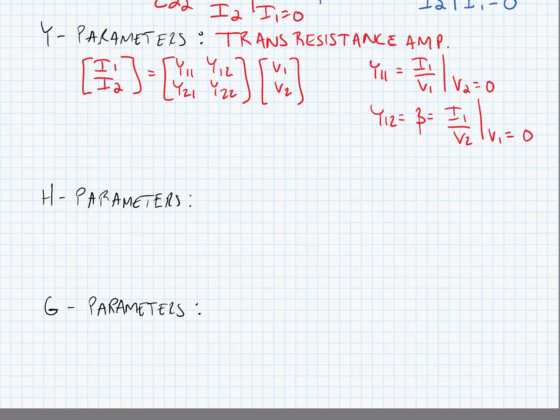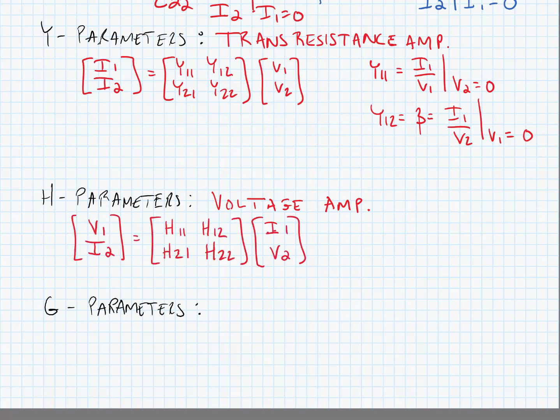The next two parameter sets are called hybrid parameters because each of the parameters is different — they aren't all the same in terms of their parameter values. Let's look at H-parameters, which are used for voltage amplifiers. Our H-parameter matrix equation is given by the following. We can see that we have a blend of voltages and currents at the input and output. H11 is equal to V1 over I1 when V2 is equal to 0 — in other words, we're finding the impedance looking into the input port when the output port is short-circuited.